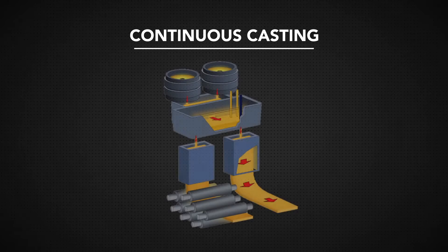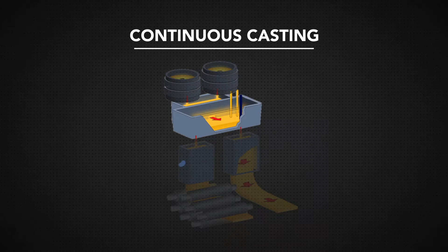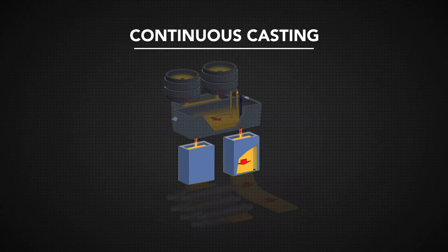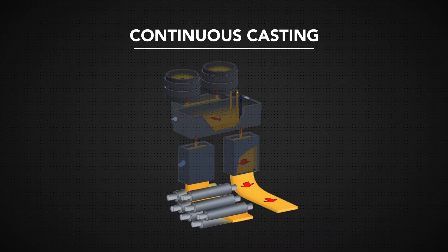The molten steel streams into a tundish, a receptacle that directs the steady flow of steel into the mold. Next, the slab of steel is doused with water, cooling it down quickly. Then, steel is run through rollers to shape the metal. To finish the casting process, the portions of steel are removed from the slab.